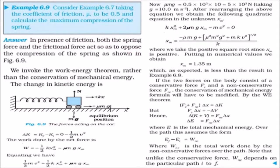Consider the same spring collision example but with a coefficient of friction μ = 0.5. In the presence of friction, both the spring force and the friction force act to oppose the compression of the spring, so the maximum compression will be less than without friction.